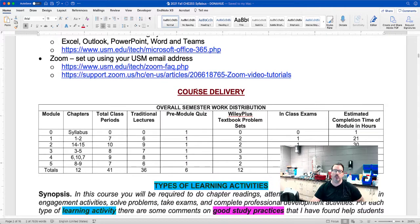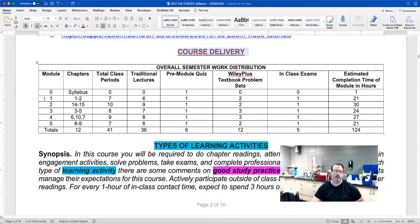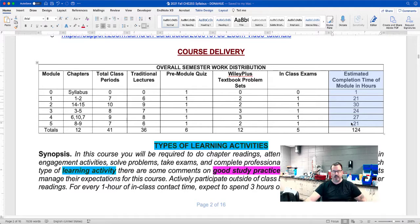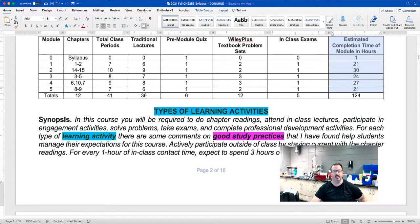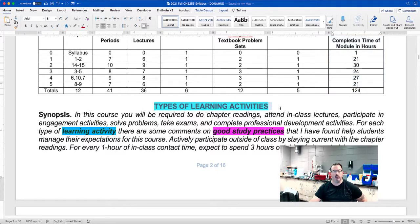Here's the course delivery. So basically, there are five modules in this course. Within the modules are the different chapters. These are the total class periods that we'll spend on those chapters, the lectures. Each module has a pre-module quiz. These are all run through Canvas. The problem sets are run through Canvas. The exams are in class. And then finally, this last column here gives you a rough estimate of the time you need to spend completing these learning activities as highlighted below.